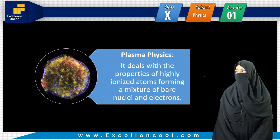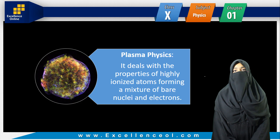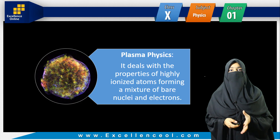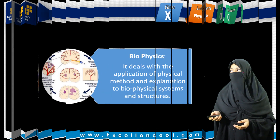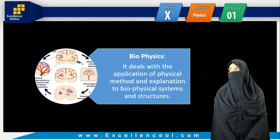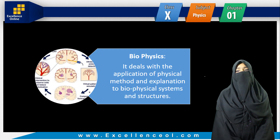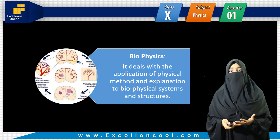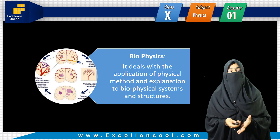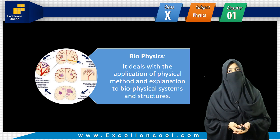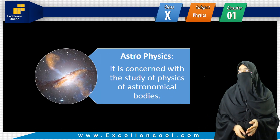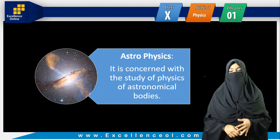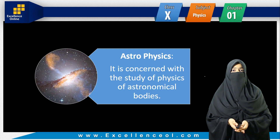Plasma physics deals with the properties of highly ionized atoms forming a mixture of bare nuclei and electrons. Astrophysics is concerned with the study of physics of astronomical bodies — mainly heavenly bodies including stars, suns, and planets.